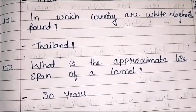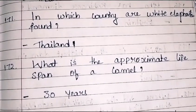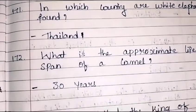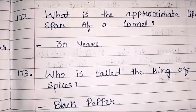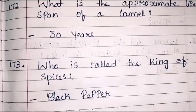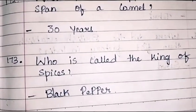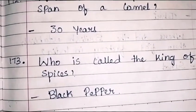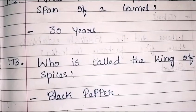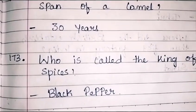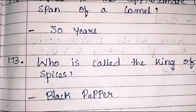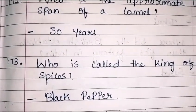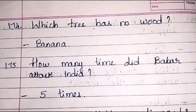What is the approximate lifespan of a camel? It is 30 years. Who is called the king of spices? Black pepper is called the king of spices.